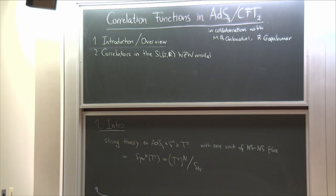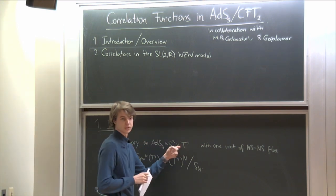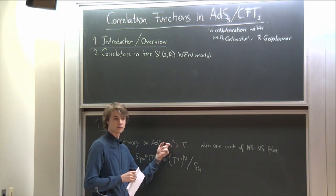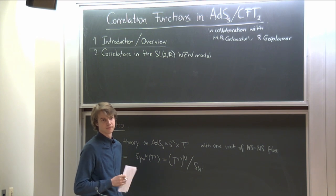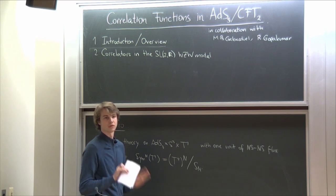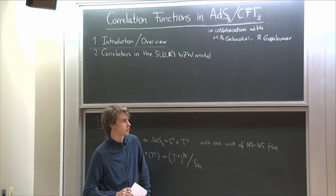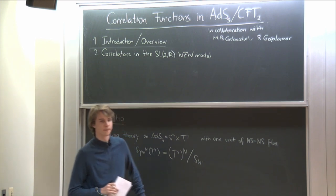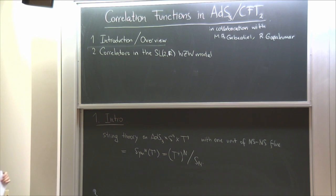What does the twist field marginal deformation correspond to in the bulk? It corresponds to putting some RR flux on the torus. But today I will not turn on RR flux — I will stick to this point in the moduli space.